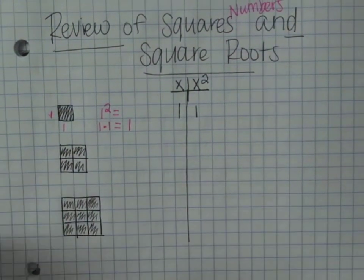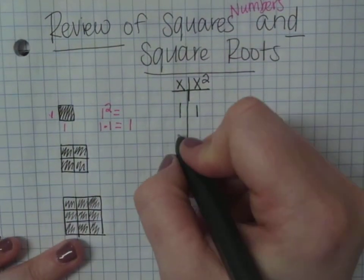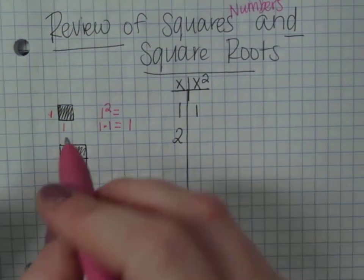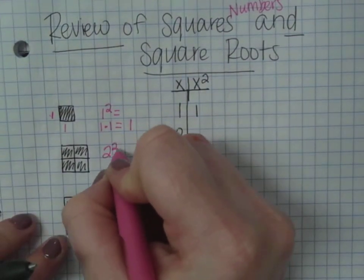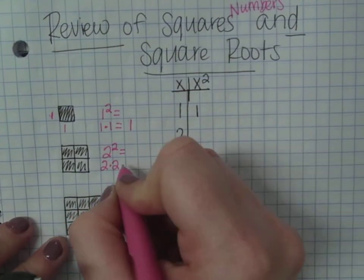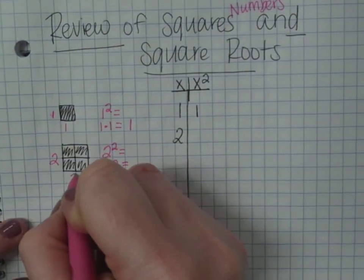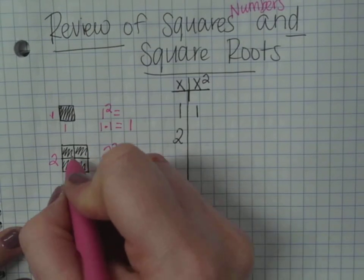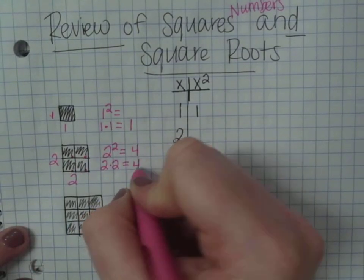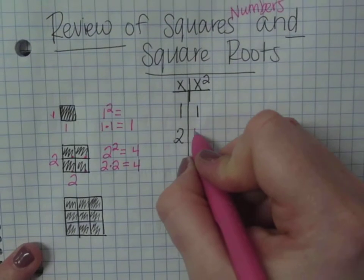Then, if we look at this one, and I have 2, and I square 2. 2 squared, or 2 times 2, 2 times 2, notice that's 1, 2, 3, 4. So 2 squared is 4.